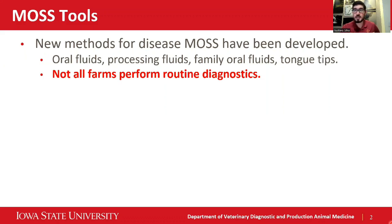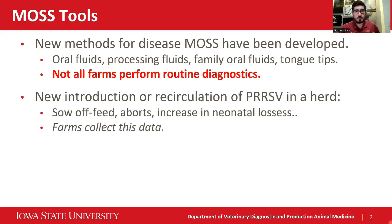One thing is that almost once a farm achieves stability, or depending on the monitoring scheme, not all farms perform routine diagnostics or send weekly samples to diagnostic labs. When we think about new introductions or recirculation of PRRS virus in a herd, usually the first things to show up will be clinical signs. Those are related to sow feed, abortions, increasing pre-weaning losses, and one of the most common clinical signs related to circulation of PRRS 1-4-4 virulent strain was high death losses in sows.